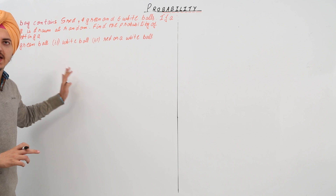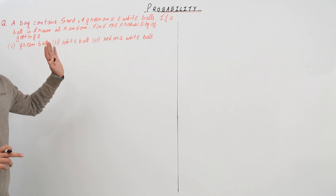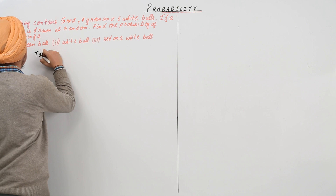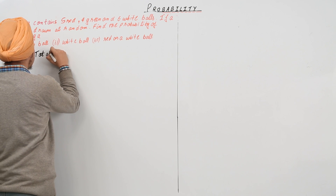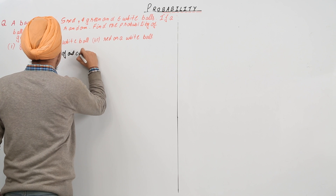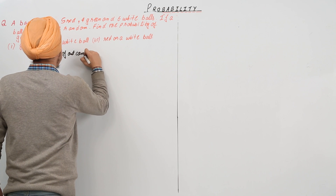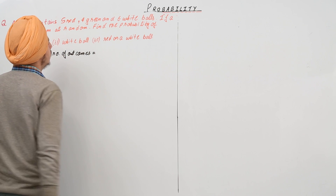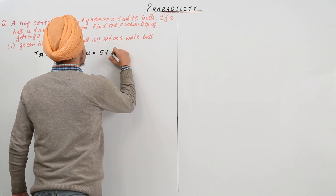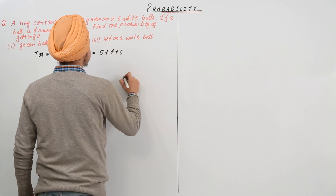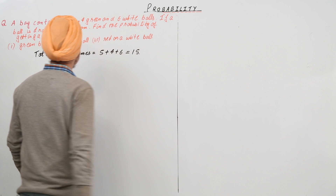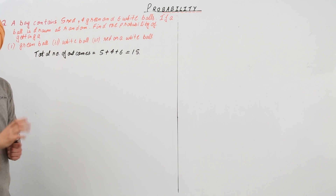Before starting with the first part, we will write the total number of outcomes. The total number of outcomes is equal to 5 plus 4 plus 6, that is equal to 15. So the total number of outcomes are 15.